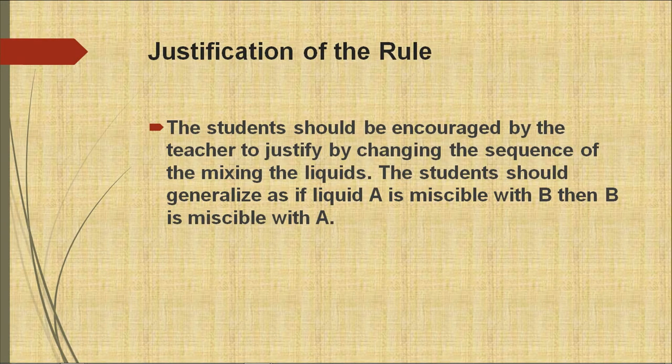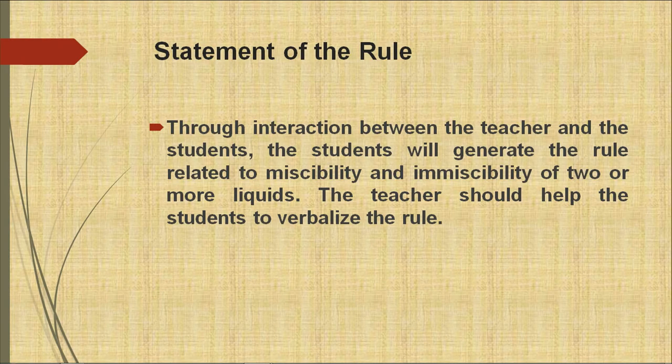The second step is JR — justification of the rule. Students are encouraged by the teacher to justify by changing the sequence of mixing liquids. Students should generalize: if liquid A is miscible with B, then B is miscible with A. The third stage is SR — statement of the rule. Through interaction between teacher and students, students generate the rule related to miscibility and immiscibility of two or more liquids. The teacher helps students to verbalize and formally state the rule.